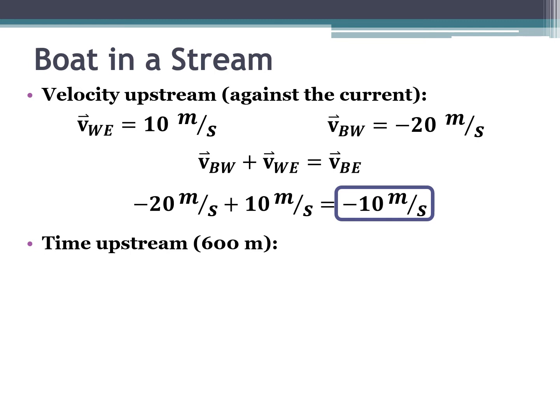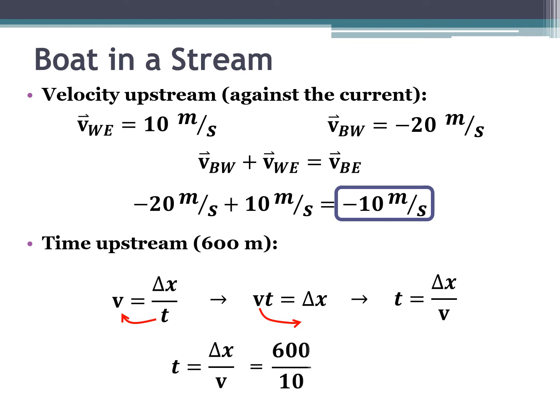The negative doesn't matter here because we're solving for time, which is a scalar. Using the equation velocity equals displacement divided by time, rearranged to time equals displacement divided by velocity, we plug in 600 meters divided by 10 meters per second — dropping the direction sign since time is scalar — and that gives us 60 seconds to go upstream.